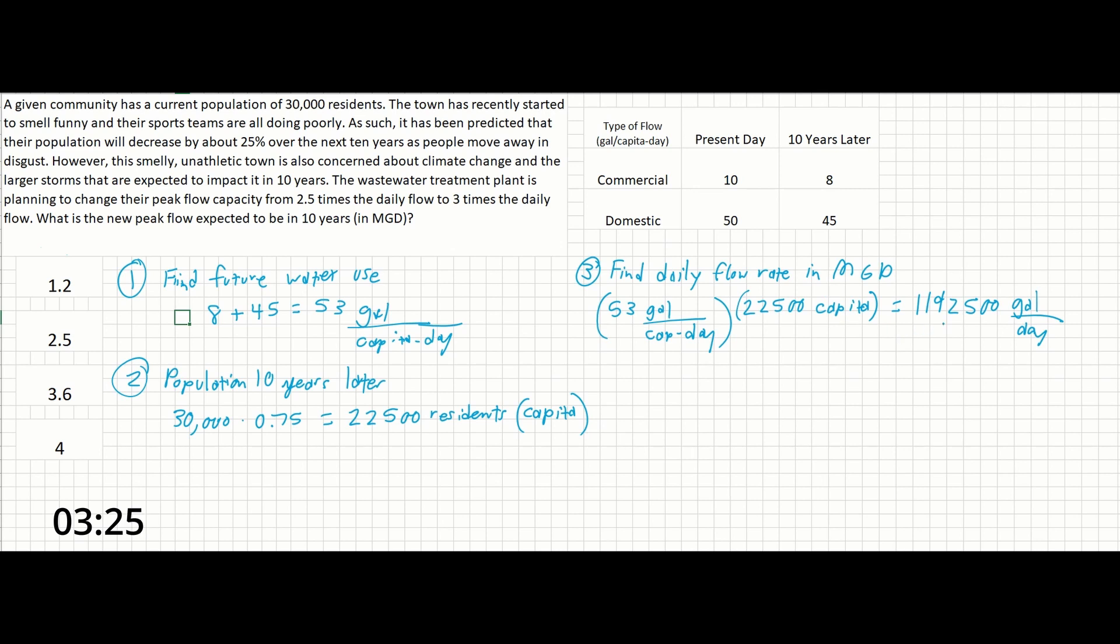And this number is the same as if we go 10 to the 1, 2, 3, 4, 5, 6, that's the same number as 1.1925 million gallons per day.